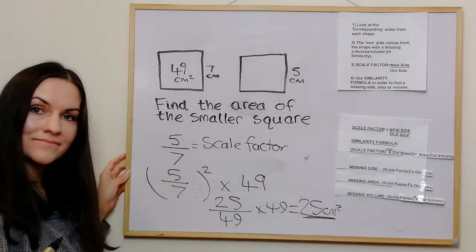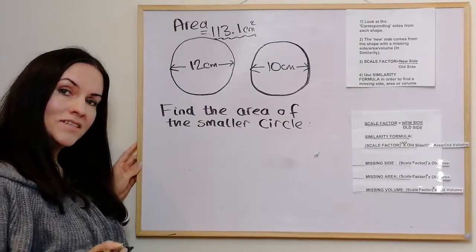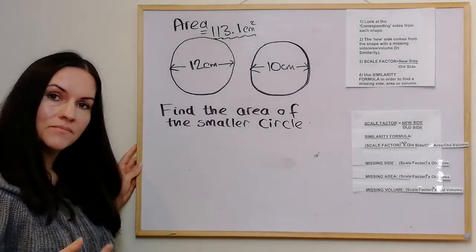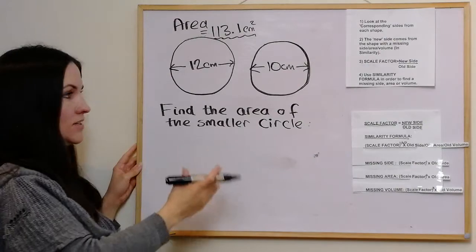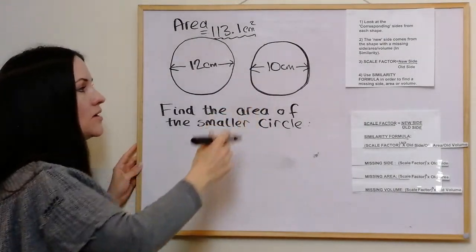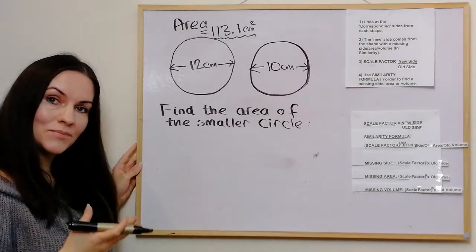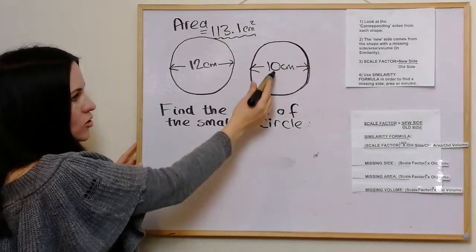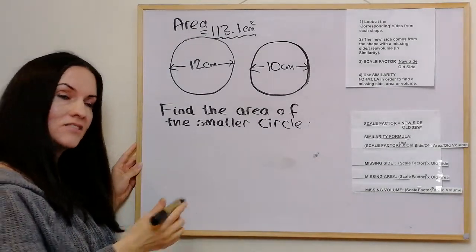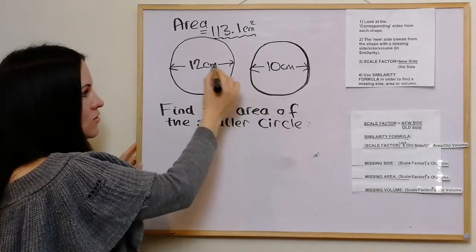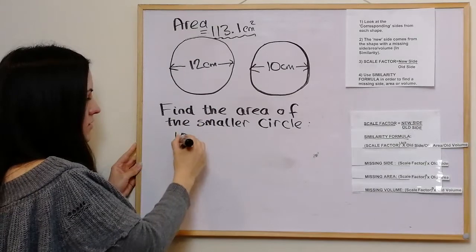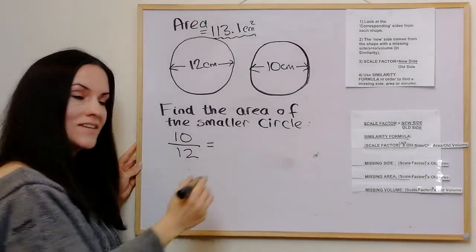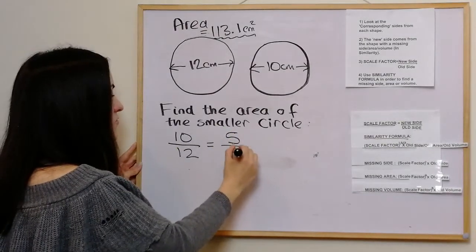In this example we've got two circles. Circles are obviously mathematically similar, and you wouldn't necessarily need to use similarity to work out the area, but we're using it to prove it works. To find the area of the smaller circle, we get the reduction scale factor first: new side over old side, which is 10 over 12, simplifying to 5 over 6. That's our scale factor.